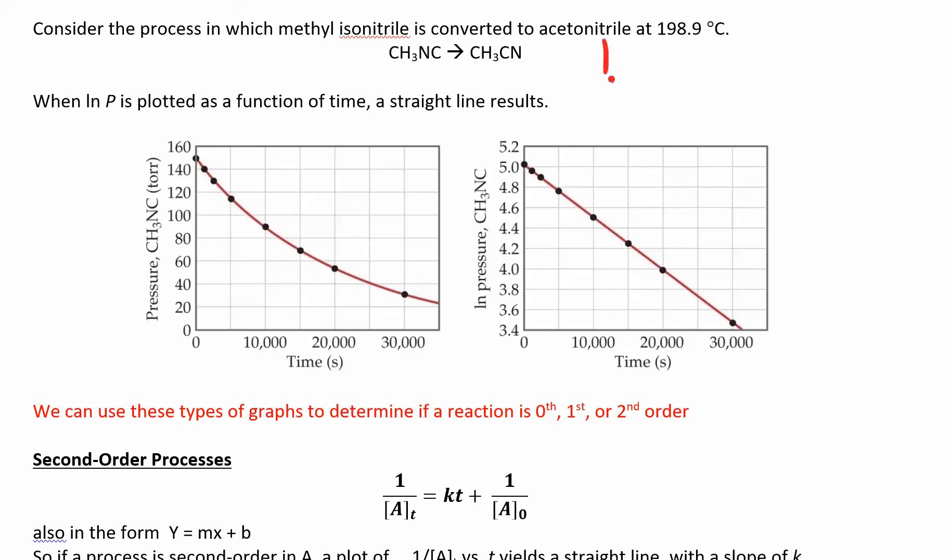So remember what that equation looks like: natural log of A at some time, this is only for first order, is negative K times T plus natural log of A initial. This is Y equals MX plus B. So you're plotting on the y-axis, you plot your natural log, and on the x-axis you have your time, and your slope here is negative K.